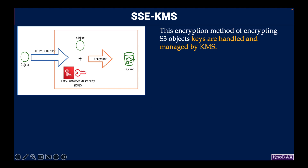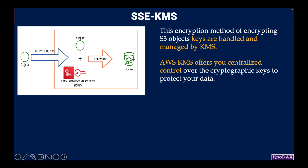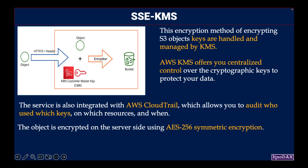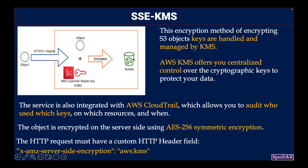Next is SSE-KMS. In this encryption method, keys are handled and managed by AWS KMS. This AWS Key Management Service offers centralized control over the cryptographic keys used to protect your data. The service is also integrated with CloudTrail, which allows you to audit — for example, who used which keys on which resources and when. The object is encrypted on the server-side using AES-256 symmetric encryption. The HTTP request must have a custom HTTP header field containing x-amz-server-side-encryption as the key and aws:kms as the value.